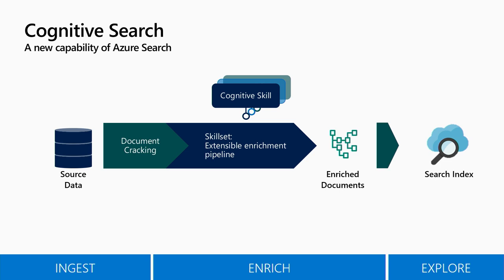In the enrichment stage we get to define a skill set — a set of skills or steps that allow us to annotate the documents. The whole presentation today is about the skill set, so I'll go into that in more detail. Once you go through all this process, you create a tree of information. We went from completely unstructured information to structured information, and structure is beautiful.